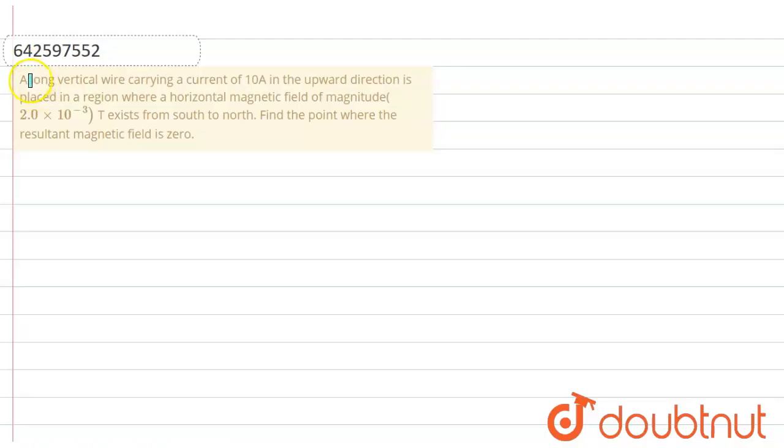In this problem we have given a long vertical wire carrying a current of 10A in the upward direction placed in a region where a horizontal magnetic field of magnitude 2×10⁻³ tesla exists from south to north. Find the point where the resultant magnetic field is zero.